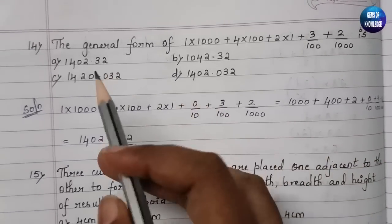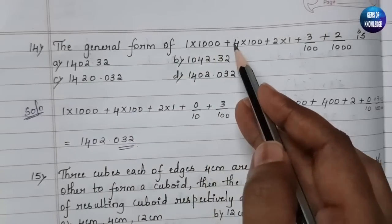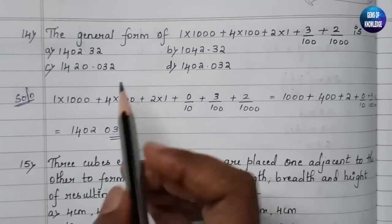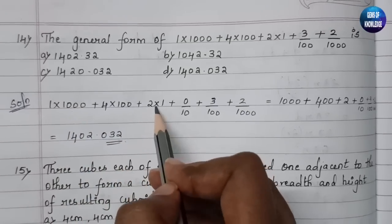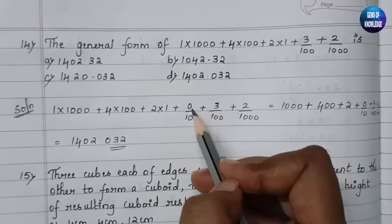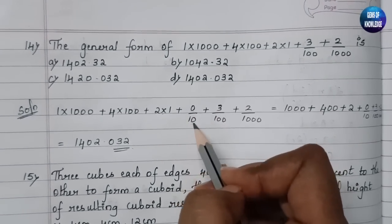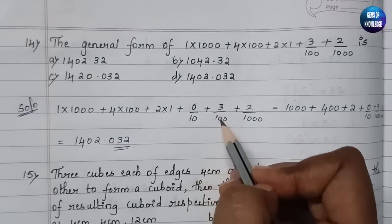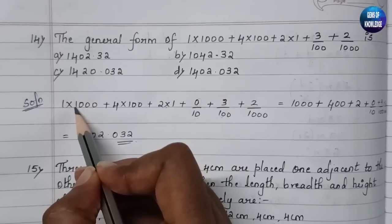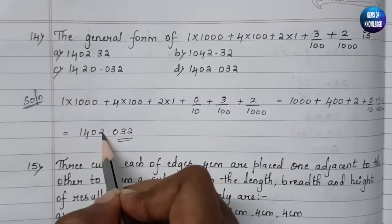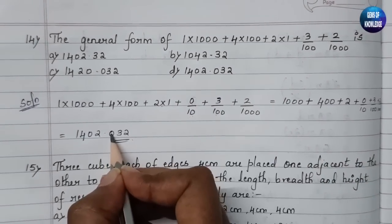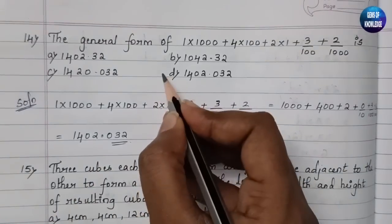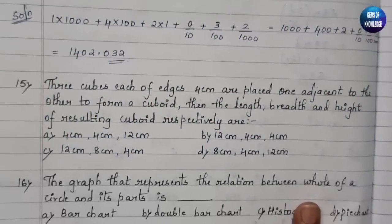The fourteenth question: the general form of 1×1000 + 4×100 + 2×1 + 0/10 + 3/100 + 2/1000. Computing: 1000 + 400 + 2 = 1402, and the decimal part gives .032. So the answer is option D, which is 1402.032.